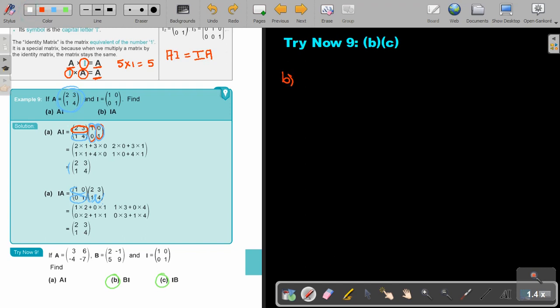So first, let's write what was B. B will be 2 and 5, and negative 1 and 9. So if I have B, and don't forget that I, it's going to be 1, 1, and the rest is 0. So if I have BI,